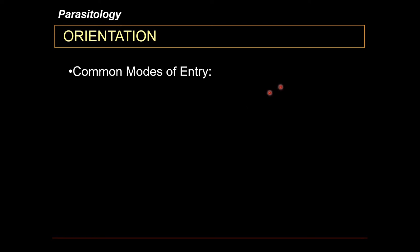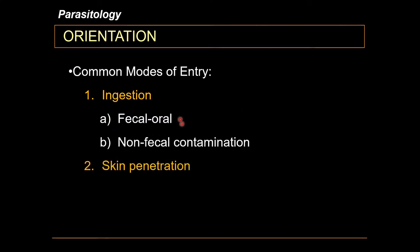Common modes of entry include ingestion through the fecal-oral route, as mentioned, and also by non-fecal contamination. Non-fecal contamination would include ingesting food such as hamburger which contains a specific parasite — so non-fecal contamination mainly refers to foodborne infections.